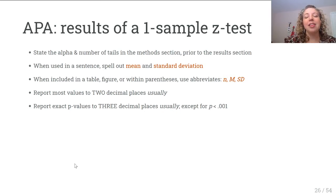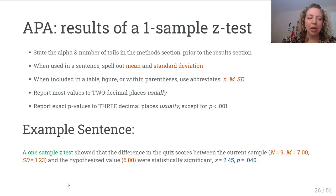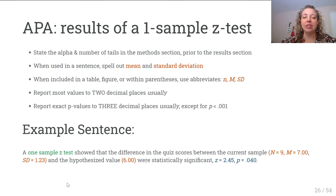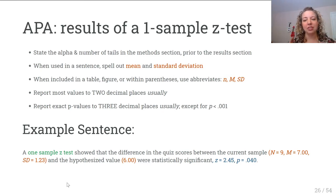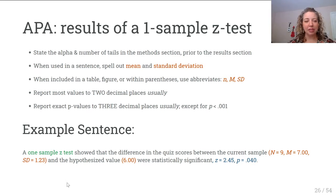If the p-value is less than 0.001, write it as less than 0.001. An example sentence might be: a one-sample Z test showed that the difference in quiz scores between our current sample and the hypothesized value was statistically significant. Your sentence should flow without reading all the values in parentheses. If stuffing sample size, mean, and standard deviation into parentheses, use abbreviations: capital N for full sample size, little n for subsample size, capital M for the mean, and capital SD for the standard deviation. There is no period after those abbreviations, no spaces between S and D, and all are italicized.